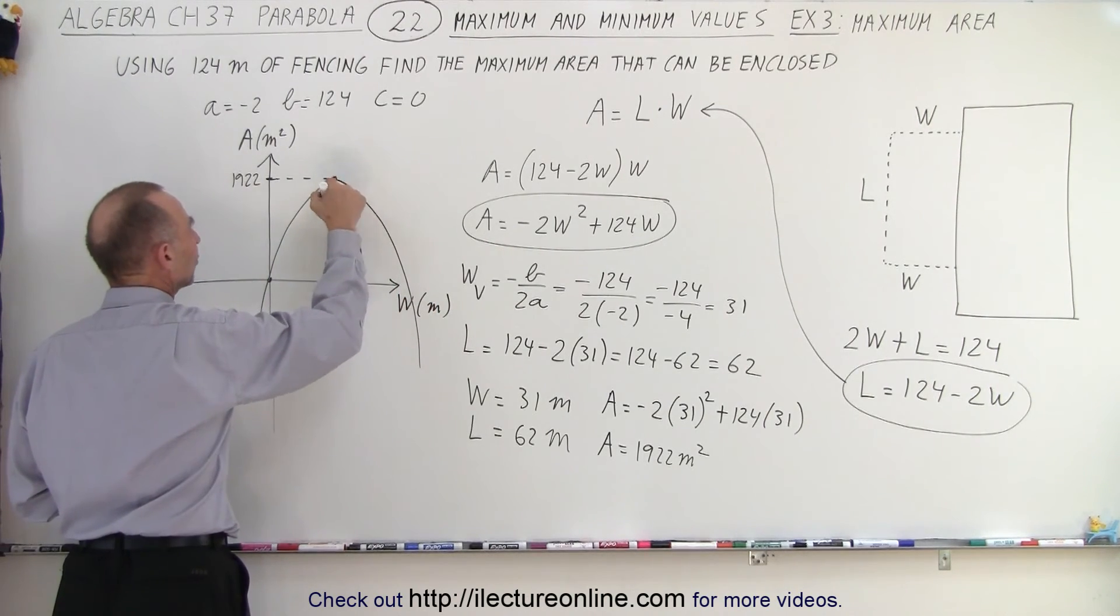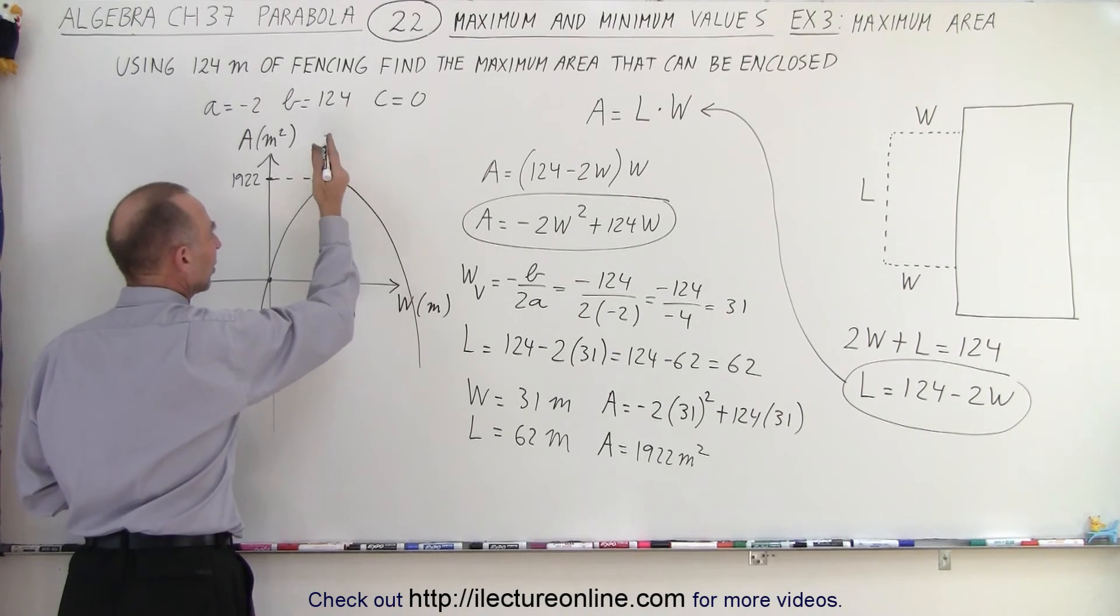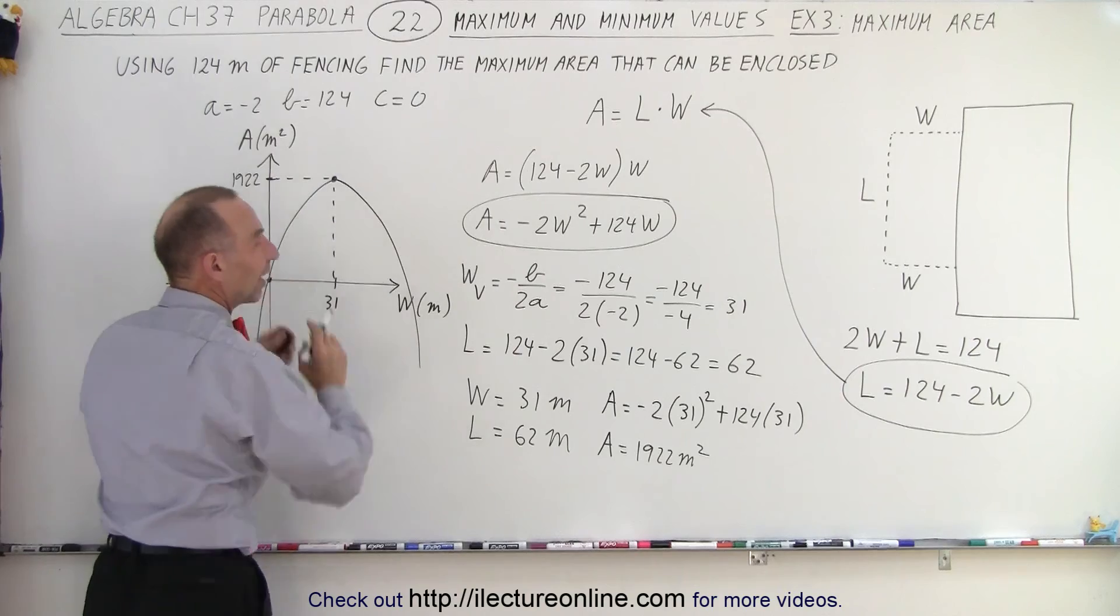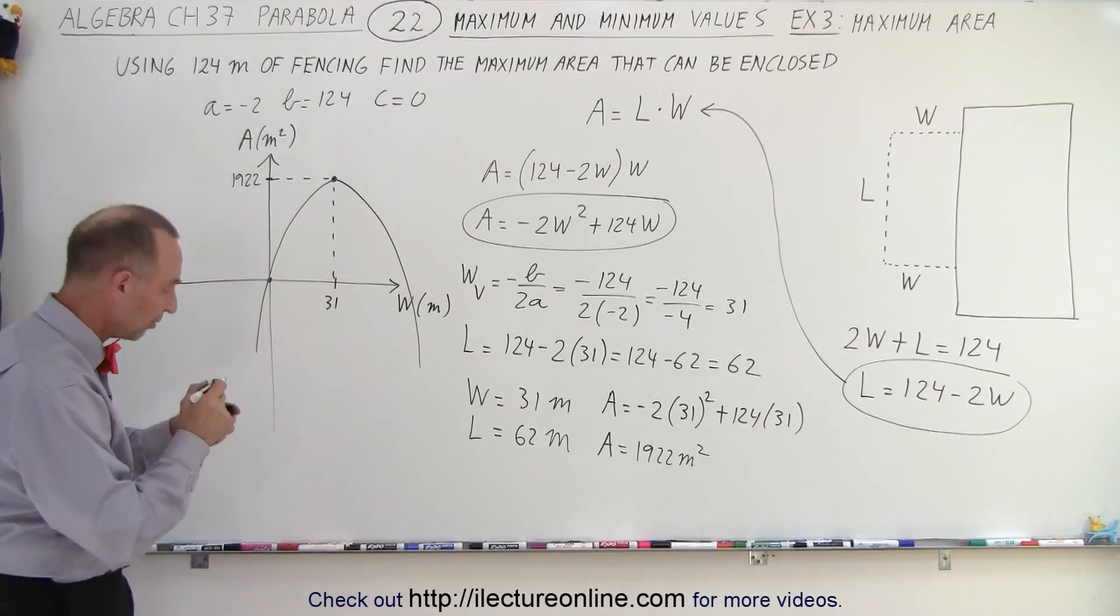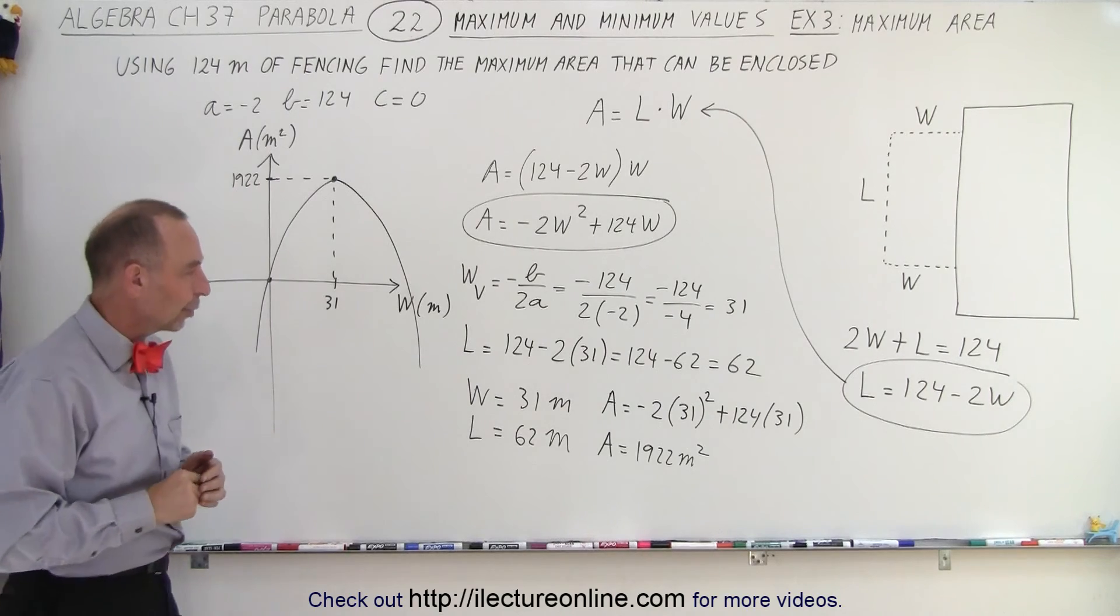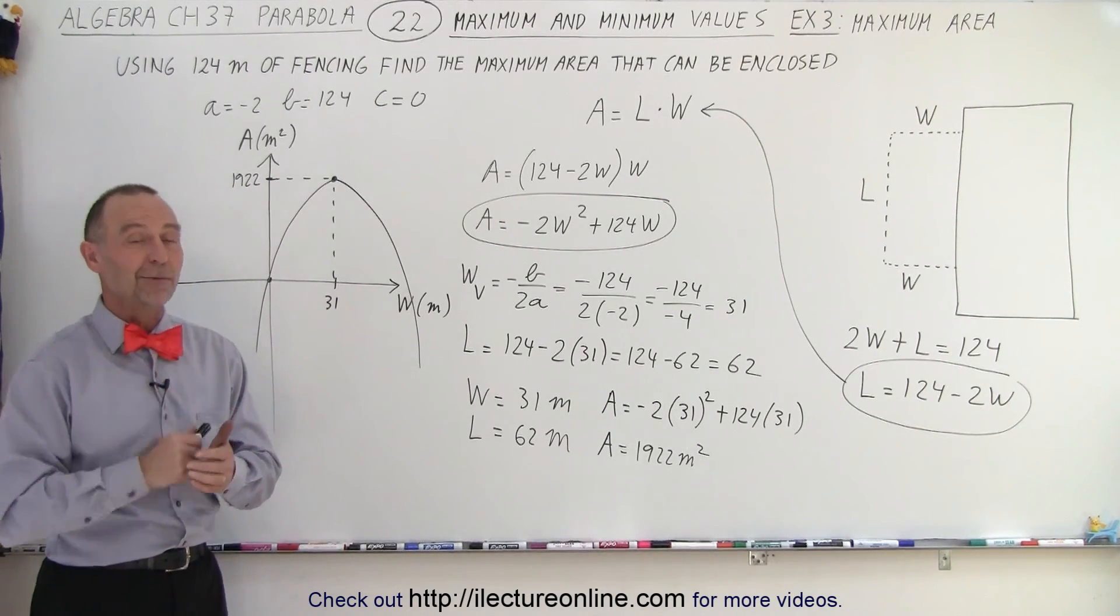And notice that's the highest point. That's the largest area when the width is 31. If the width is less or more, you'll have less area enclosed. That's the maximum value gained or obtained when the width is equal to 31 meters. And that is how it's done.